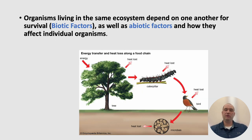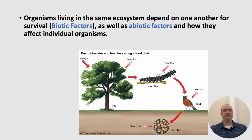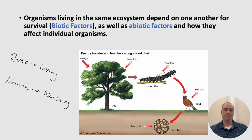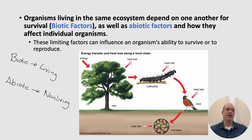Organisms living in the same ecosystem depend on one another for survival. All the animals in a community depend on one another for food or some type of symbiotic relationship, but they also rely on abiotic factors. Biotic factors are the living factors in our ecosystem, while abiotic factors are the non-living things. These limiting factors — biotic and abiotic — can influence an organism's ability to survive or even reproduce.